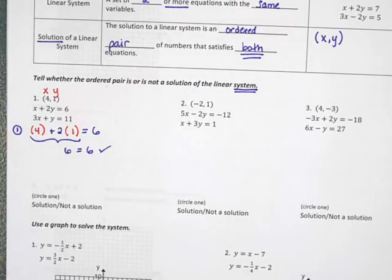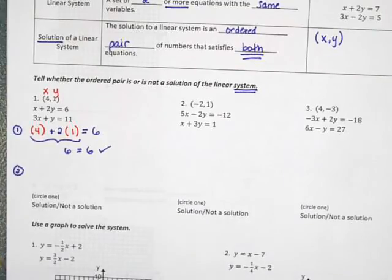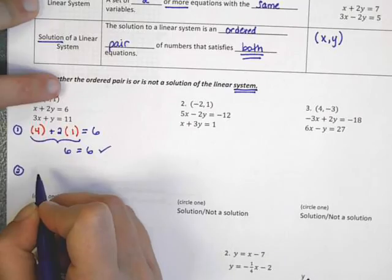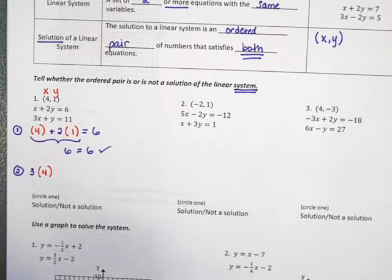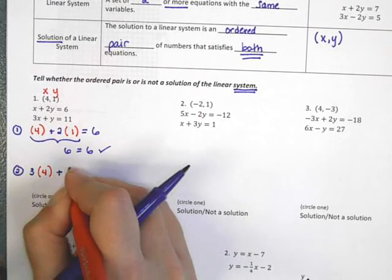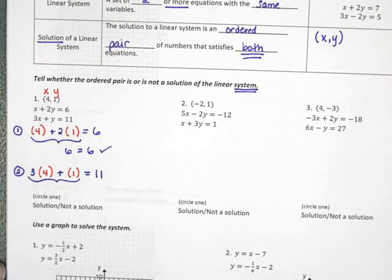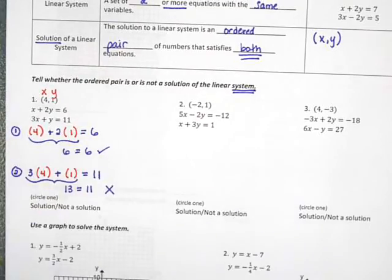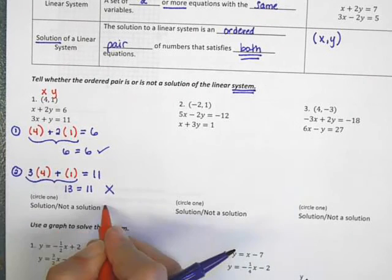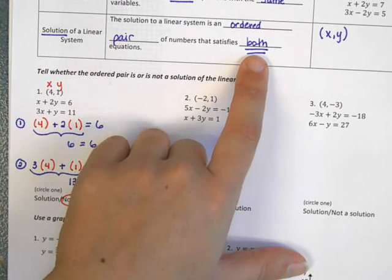But that is not enough to make it a solution of the system. In order to be a solution of the system, we also need to check the second equation. So I'm going to plug x and y into the second equation: three times four plus one equals 11. Simplifying, three times four is twelve, plus one would be thirteen. Thirteen does not equal eleven. Because this ordered pair does not work for the second equation, it is not a solution of the system. To be a solution, it needs to work for both equations.